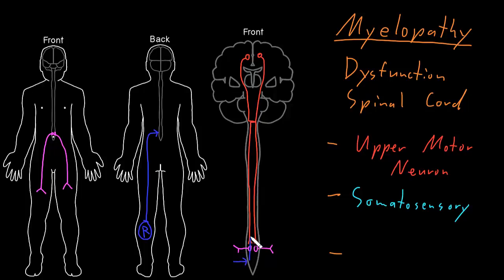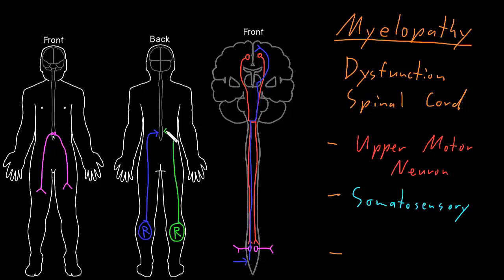That information travels along neuron axons up to the brain, and it also crosses over. It eventually reaches an area of the cerebral cortex involved in somatosensory functions. There's also another receptor that can detect pain, temperature, or gross touch. That information travels along neurons in the peripheral nervous system, takes a slightly different path, but also goes up to the brain to reach that somatosensory area of the cerebral cortex.